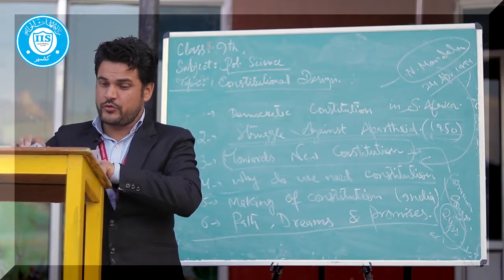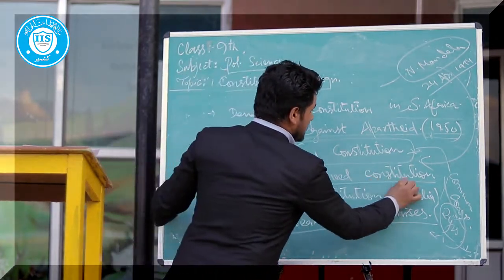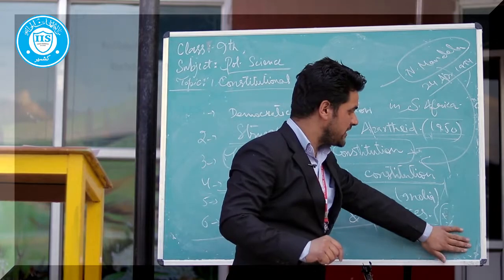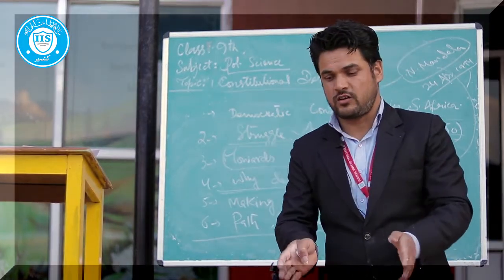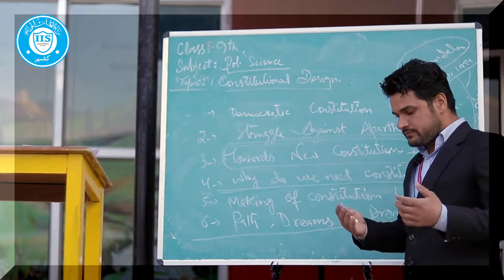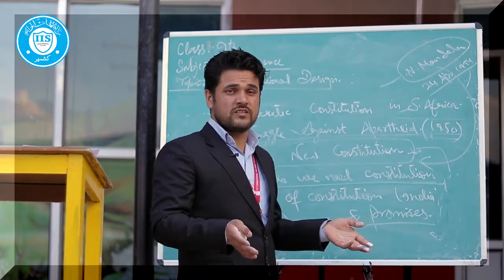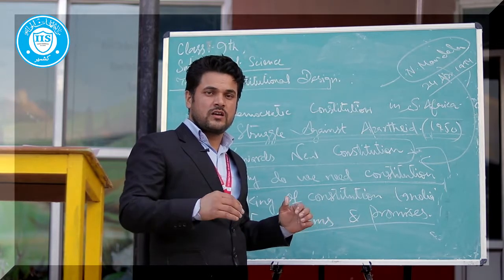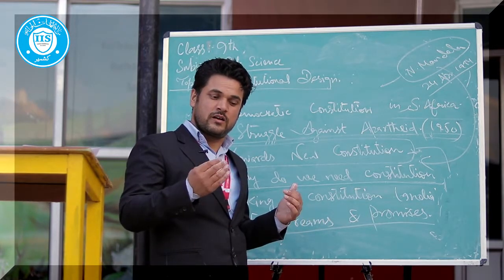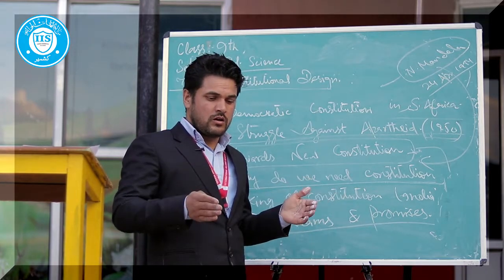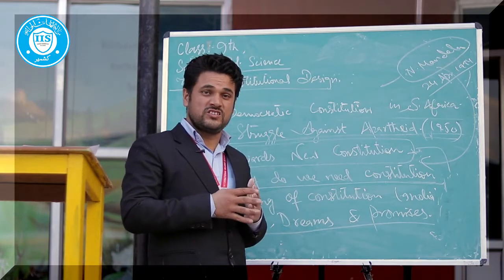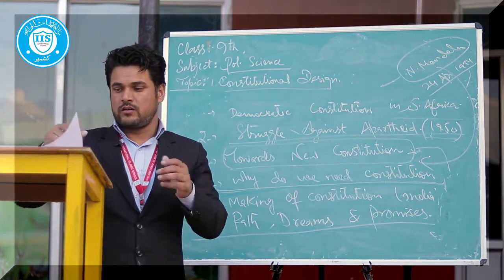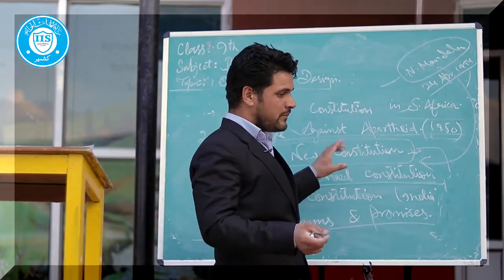Now we will discuss why we need a constitution, moving to talk about India. Why do we need a constitution for a country? Why do we need a set of laws, rules, and regulations? Without a set of rules and regulations, there will be misuse or illegal use of power. You could crush or destroy society because there will be confusion. Thus, we need laws and regulations — the need for a constitution is absolutely necessary.